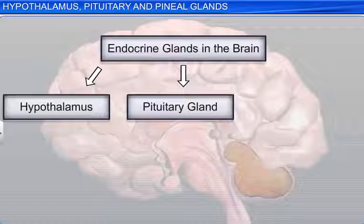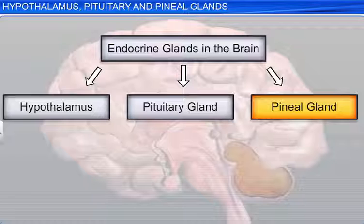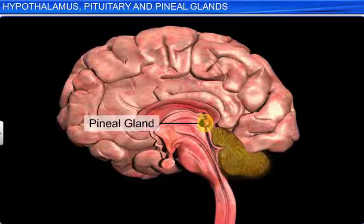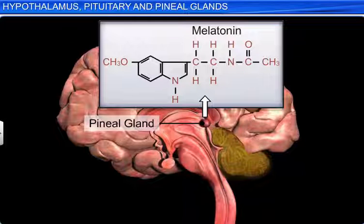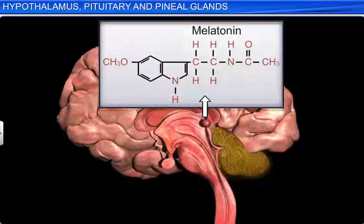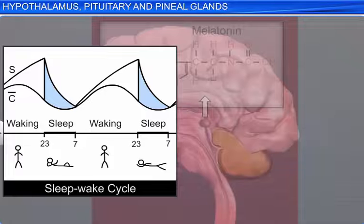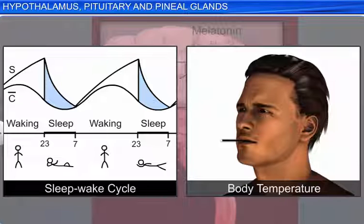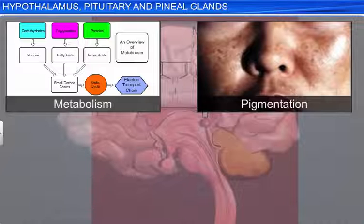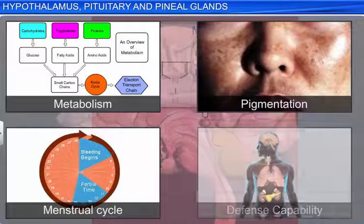Another endocrine gland in the brain is the pineal gland. It is a small, rounded gland located on the dorsal side of the forebrain. It secretes a hormone called melatonin, which regulates the 24-hour rhythm of the body. It maintains the normal rhythms of the sleep-wake cycle, body temperature, and also influences metabolism, pigmentation, the menstrual cycle, and our defense capability.